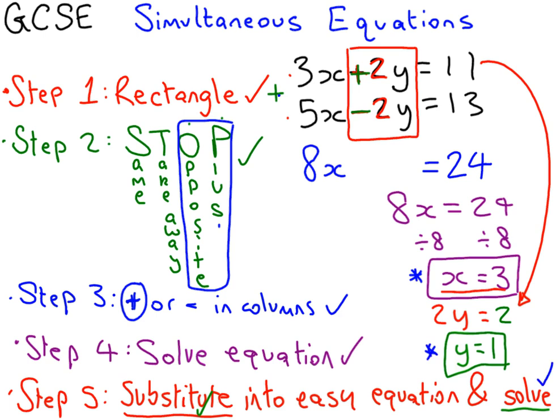If you don't believe me, if you want to check that works, try putting 3 in for x and 1 in for y and you'll get the answer. 3 times 3 is 9 plus 2 times 1 gives you 11. Same for this one. 5 times 3 is 15, take away 2 times 1 is 2, 13. So this way works. Now notice that this was only so easy, if I can call it easy, because we had the two ys that were the same. If you don't have the two numbers the same, you can't straight away go to the rectangle. So I've left a little gap here for an extra step if you need it, called step X. It's going to be step X for multiply.